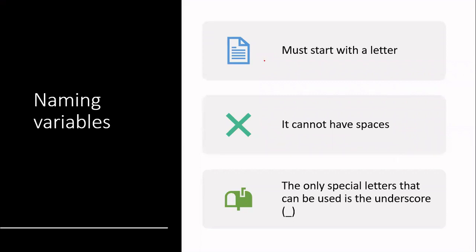When you are naming these placeholders or variables, take note that the variable must start with a letter. We just want to follow some good naming principles so that when we start programming, these principles will apply and help us. So ensure that your variables start with a letter. Secondly, make sure your variables do not have any spaces, and also ensure that your variables don't have special characters like the hash or the dollar sign. The one special character you can use is the underscore.